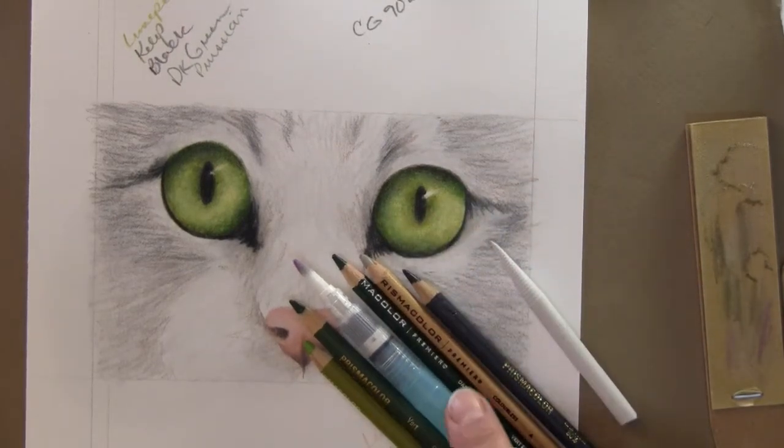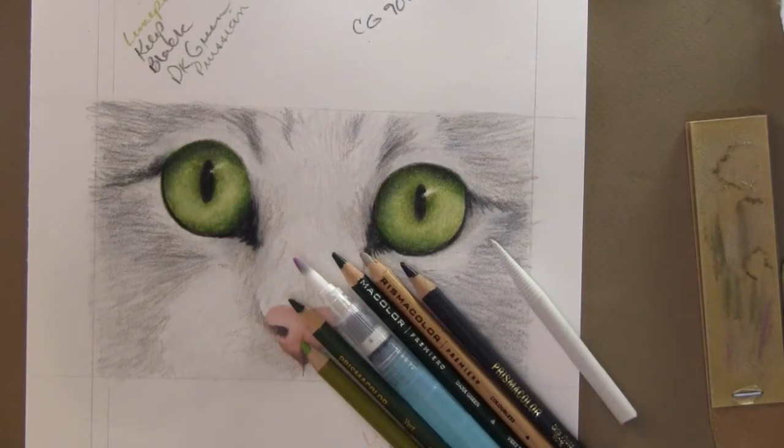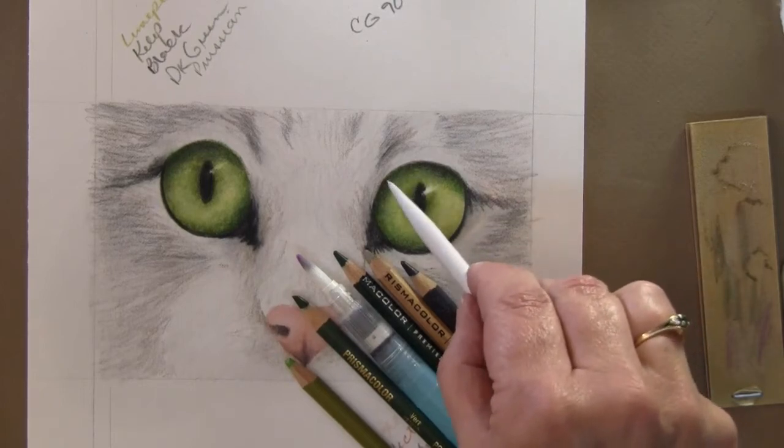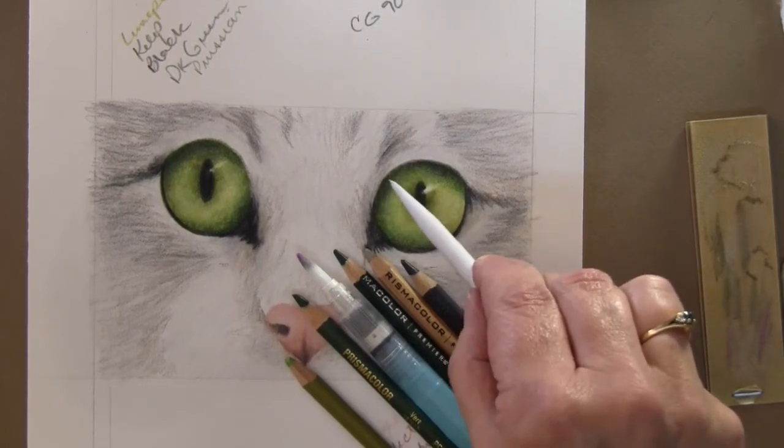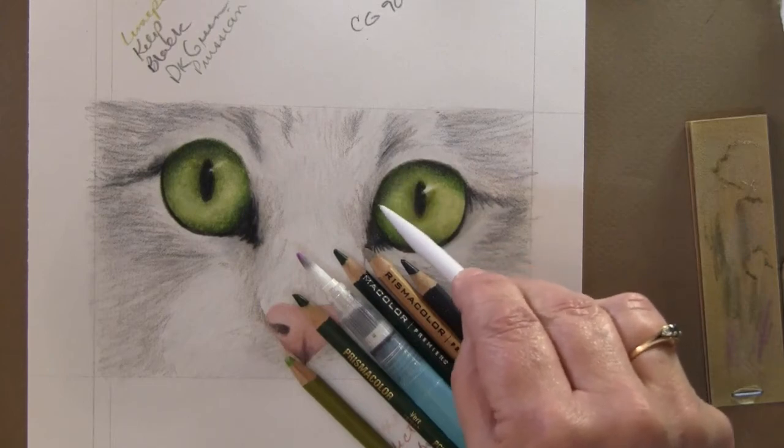Applied the OMS whenever I needed to, added another shade, which was the Cool Gray 90, and I used the tortillon to help blend the shadows.